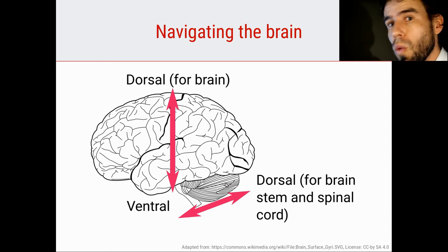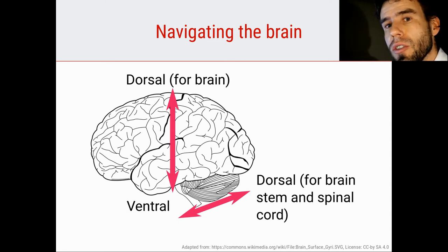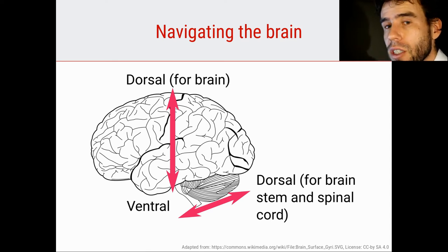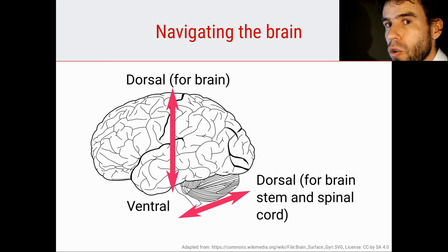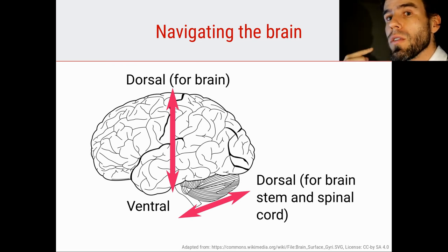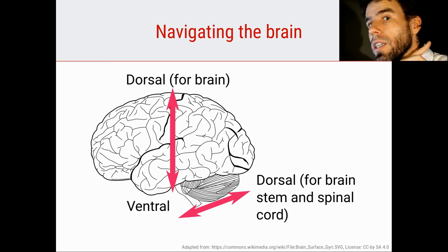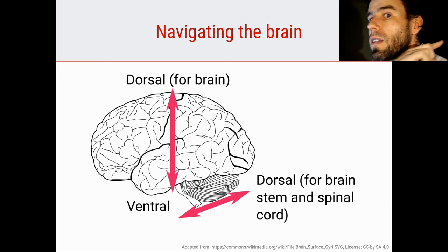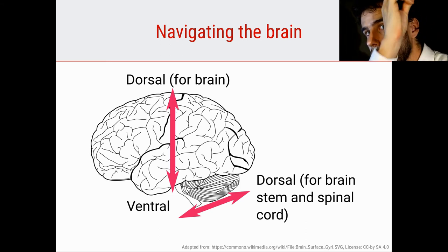Dorsal means towards the back. Because of this curvature of our neck, this term can mean different things depending on which part of the body or brain you're talking about. In the case of most parts of the brain, towards the back means up. But for the brain stem and the spinal cord, towards the back actually means literally towards the back — so it goes like this: dorsal, dorsal, dorsal.